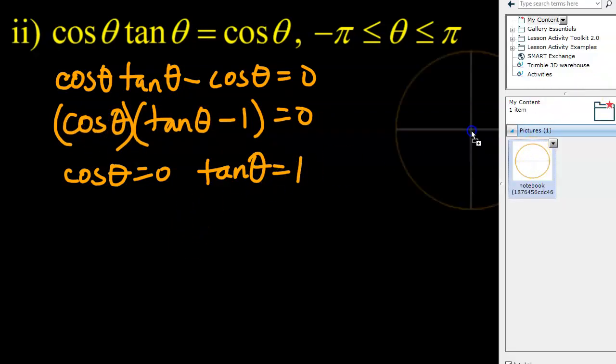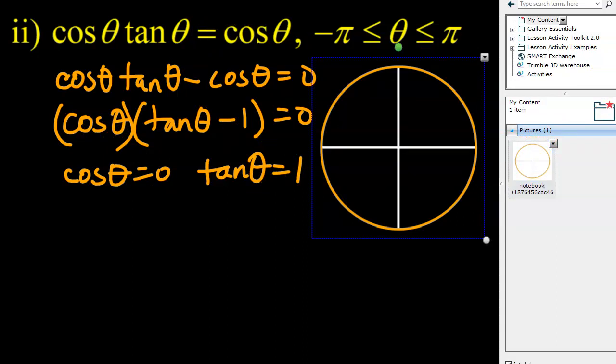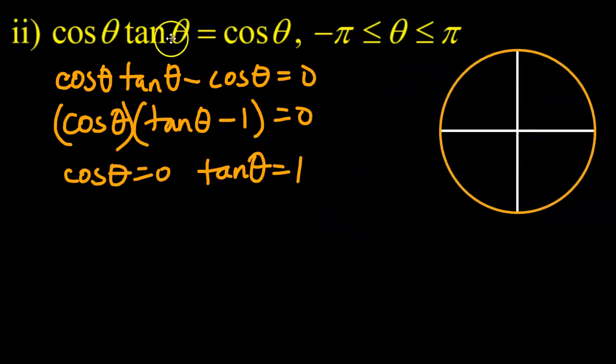Where's my trusty unit circle? So what I'm going to do is I'll take this and I'll figure out where cos θ equals zero. My bad, cos θ equals zero straight up and straight down, where there is no x coordinate. Straight up, you just have (0,1), straight down (0,-1).